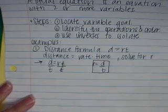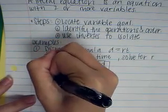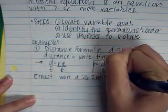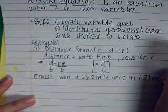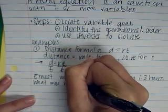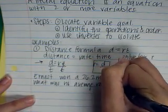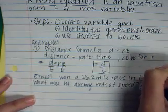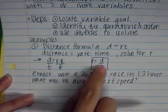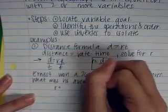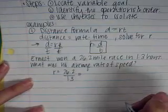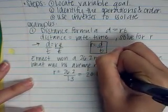Let's put some application to that. For example, Ernest won a 26.2 mile race in 1.3 hours. What was his average rate of speed? The reason we want to find is average rate of speed. That's why we would solve here. So, we could get R equals. And then we're going to plug in our distance, which is 26.2. We're going to plug in our time, which is 1.3.